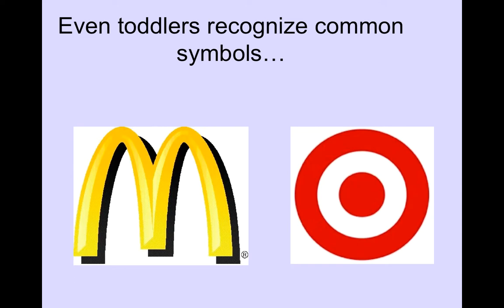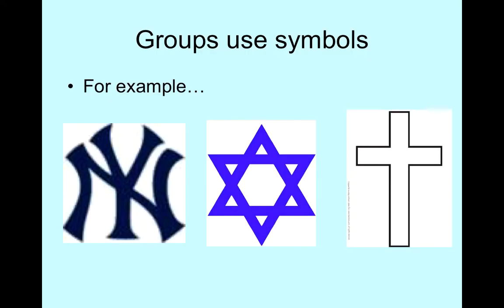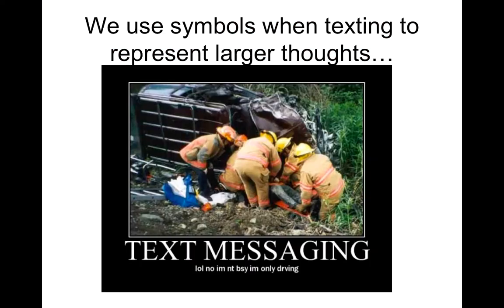Even toddlers recognize common symbols. McDonald's was the very first sign my kids could read. Most of you, if you see the Target sign, you know what it's talking about. Groups use them too — here we have a few: one's a baseball team, we've got two different religions. The one in the middle is called the Star of David, that's for the Jewish religion. And then we have the cross, which symbolizes the Christian faith. We use symbols when texting to represent larger thoughts.